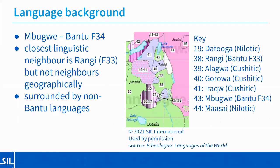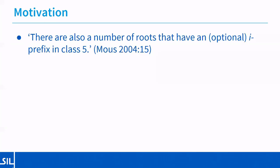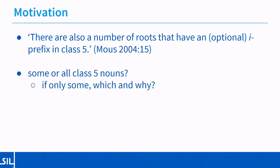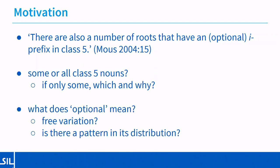My interest was piqued by this statement in Martin Mauss's grammar sketch, that there are also a number of roots that have an optional E prefix in class five. And I started to wonder whether this optional E prefix could occur on some, or whether it could occur on all class five nouns. If only some, which ones and why? And also what does optional mean — is it truly free variation or is there a pattern in its distribution?